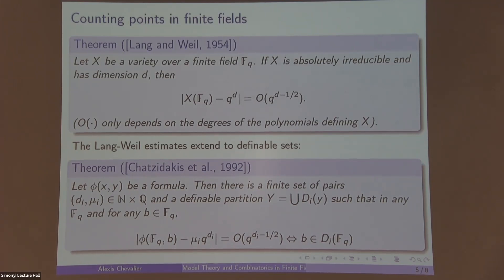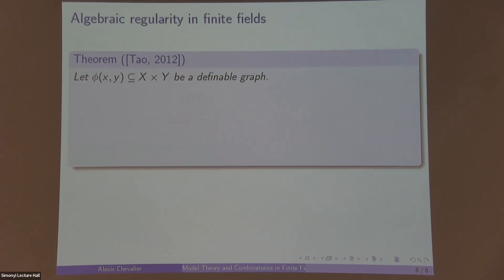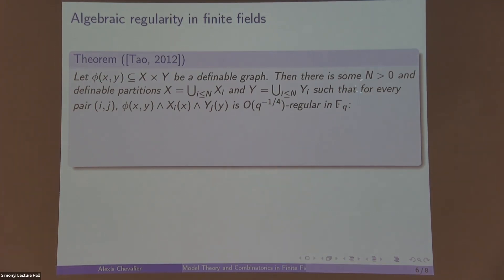And one application of this definable measure is a Szemerédi-style regularity lemma in finite fields, due to Tao. So let's take now a formula φ(x,y) in X × Y which we're going to think of as a definable graph. Then there is some N and definable partitions of X and Y into X_i and Y_i such that for every pair (i,j),